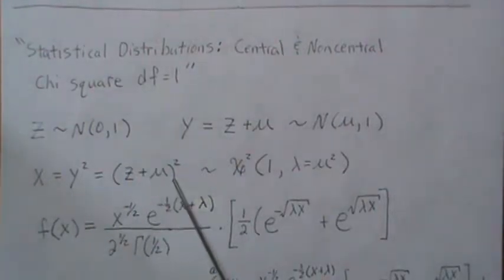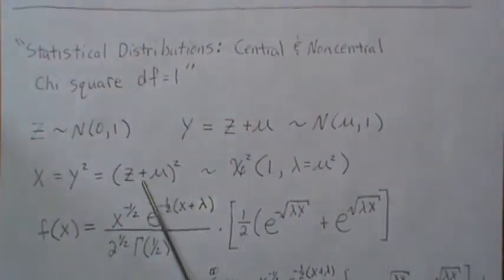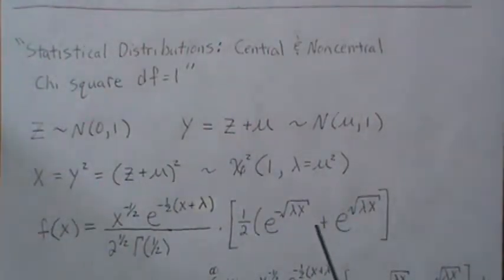And I write it like this. Normally you'd just say if we let X be equal to Y squared, X is distributed non-central chi-squared with degrees of freedom 1, non-centrality parameter. But this is going to play a part on page 3. So here's the density for this.